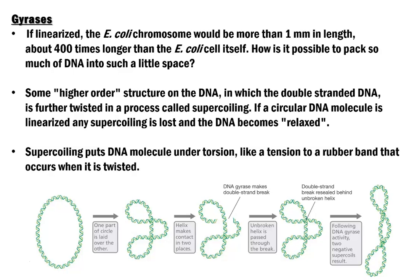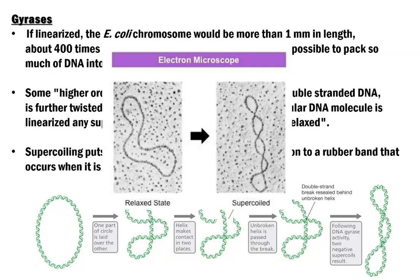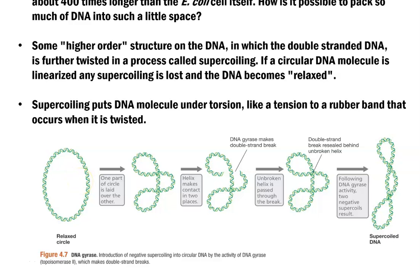The answer is that it is a higher-order structure of the DNA which makes it easily packed inside the cell. This higher-order structure refers to conversion of the double-stranded DNA into a highly supercoiled form by a lot of twisting. If a circular DNA molecule is linearized, most of the supercoils will be removed and it will be referred to as a relaxed form. So two forms of DNA exist: one is a relaxed form, and another is a highly twisted form, also called a supercoiled form. This supercoiling puts the DNA molecule under torsion.